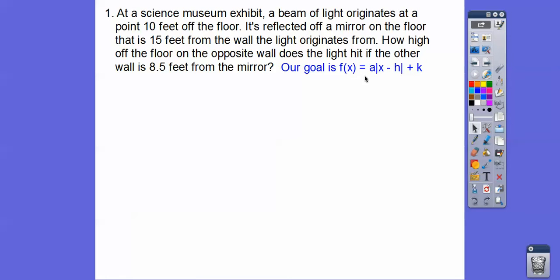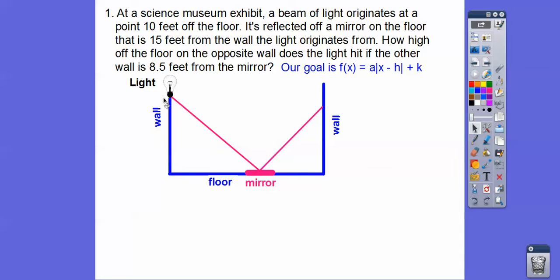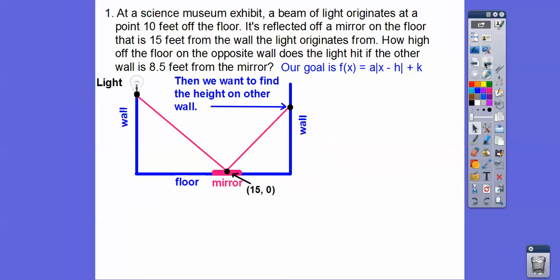Don't forget our goal is y equals a times x minus h absolute value then plus k. And they want functions. So f of x or g of x or h of x. So here we are. It's 10 feet off the floor. So we'll call this 0,10 right here. And so here's the floor. The light gets reflected on this mirror right here and they tell us this mirror is 15 feet. And then how high is that reflection going to be up here? How high is a y answer right here when this is 8.5 feet away right there. If this is 15 feet and this is 8.5 feet, then if this is 0,0, over here is going to be 15 plus 8.5 is 23.5. So we're looking for this y value right here. So this is going to have coordinates 23.5 comma y.